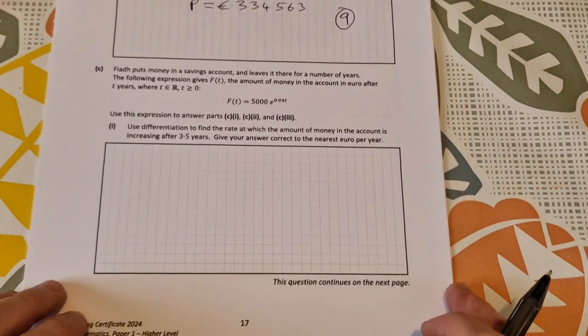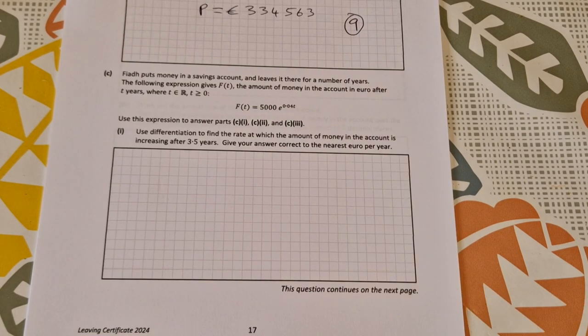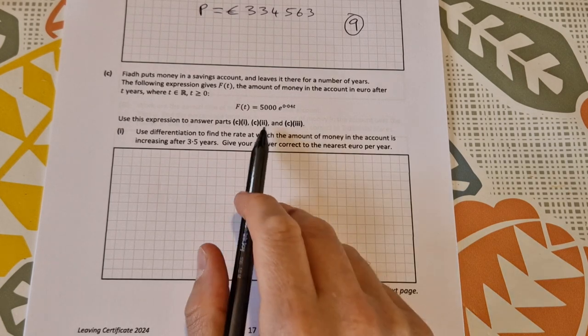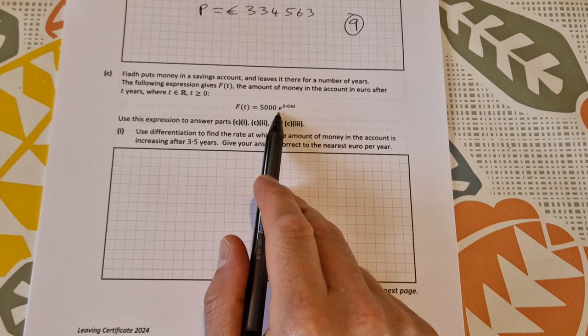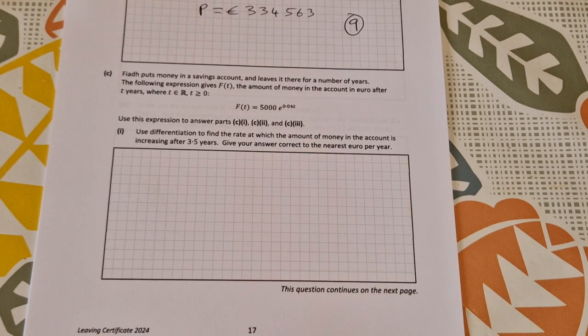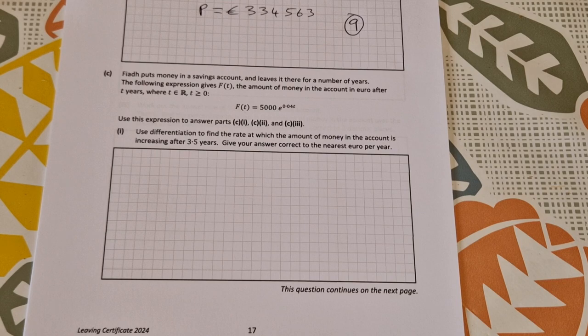For part C then: Fia puts money in a savings account and leaves it there for a number of years. The following expression, F of T, is the amount of money in the account after T years, where T is greater than or equal to zero. So the function is F of T equals 5,000 times e to the 0.04 T. Use this expression to answer parts C 1, 2 and 3. Use differentiation to find the rate at which the amount of money in the account is increasing after three and a half years. Give your answer correct to the nearest euro per year.